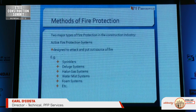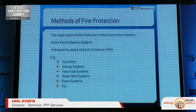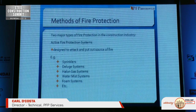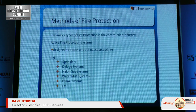There are two major types of fire protection in the construction industry. Active fire protection systems are designed to attack and put out the source — like sprinklers, deluge systems, halogen gas, water mist, foam systems, etc.